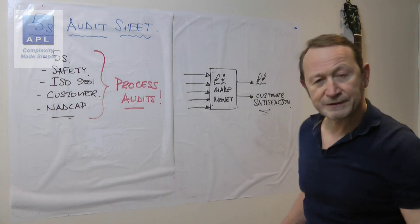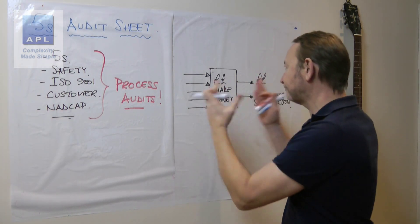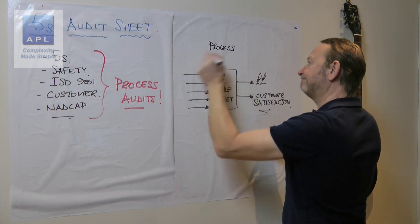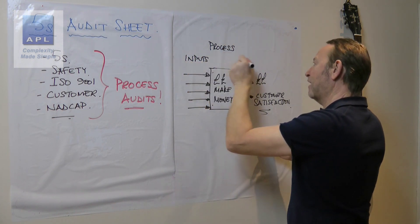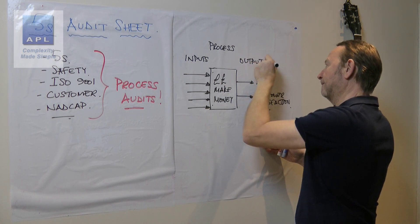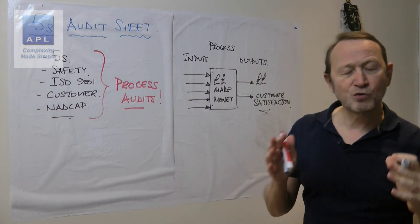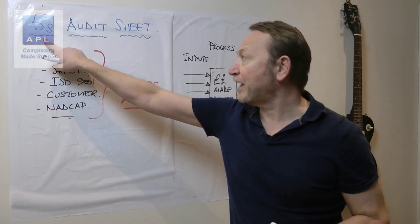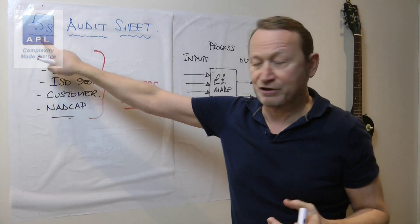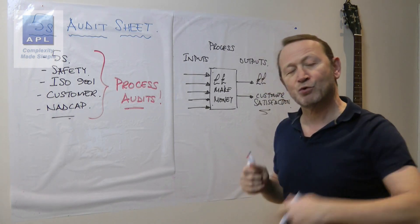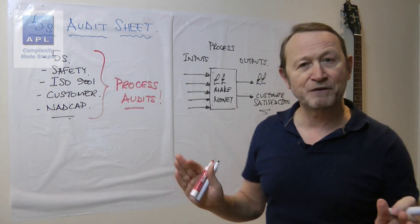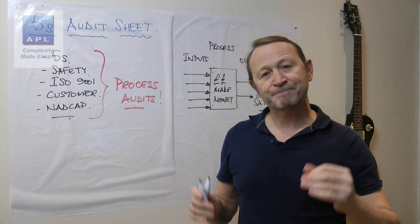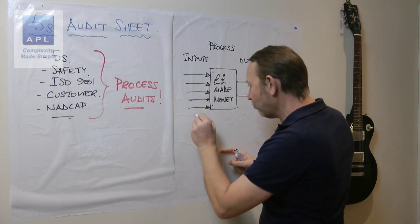You can add some more KPIs to that if you want. So this is your process — inputs, outputs. Now if you want to make money, what have you got to do? You've got to control the inputs. You've got to come up with standards for the inputs — that's what 5S gets you to do. It's not just 5S; it could be done through TPM and other maintenance-related standards. Lots of different standards.